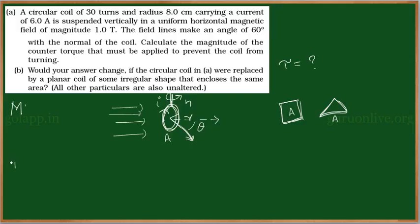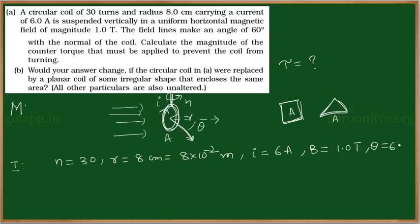Now, come to investigation part. What are the quantities that have been given? Circular coil of n turns, so n is equal to 30, and the radius r is equal to 8 centimeters, so that is equal to 8 into 10 to the power of minus 2 meters, carrying a current I is equal to 6 amperes, under the field B is equal to 1.0 tesla, and it is making an angle theta is equal to 60 degrees.